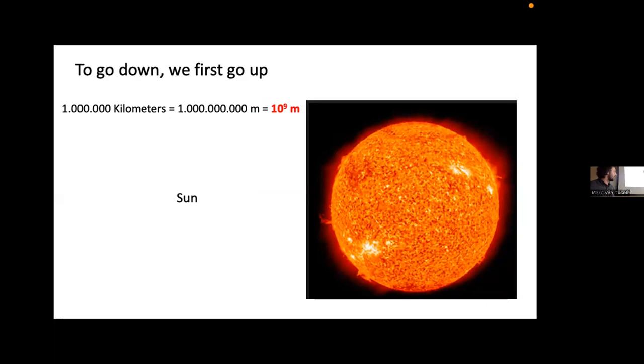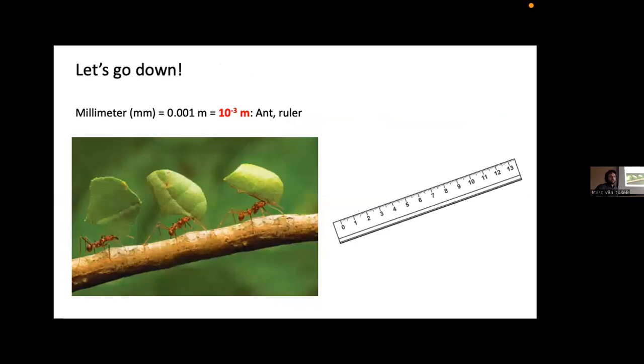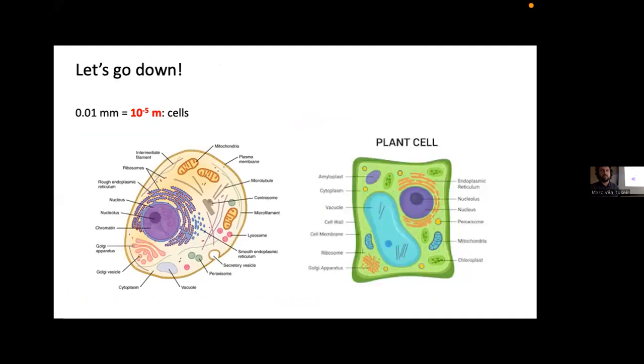You know, the sun is pretty big, right? It's 10 to the nine meters in comparison to myself, that's pretty small in comparison with the sun. Okay, let's go back to myself. Now let's go down in the scale. We have the millimeter, which is 10 to the minus three meters. These things we start with, we still can see them, like the ants, small animals. We use a ruler to measure this scale. Then 10 to the minus four meters or 0.1 millimeter. That's like the hair thickness or the paper thickness.